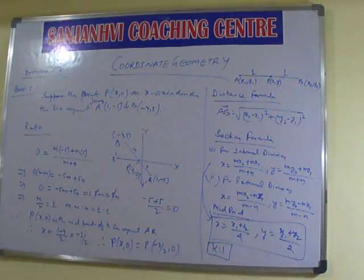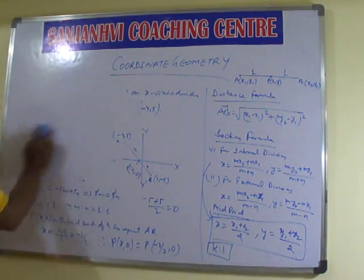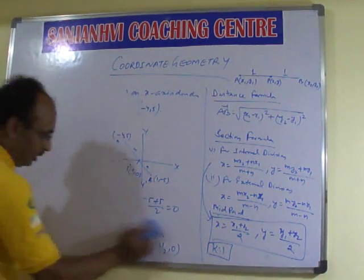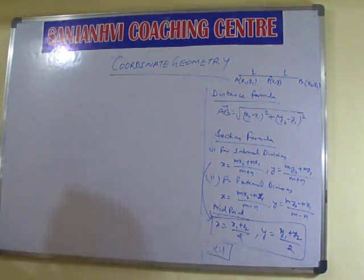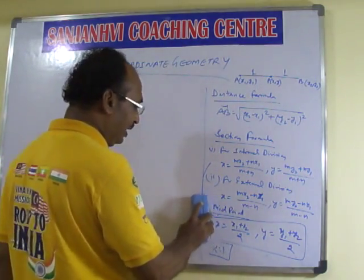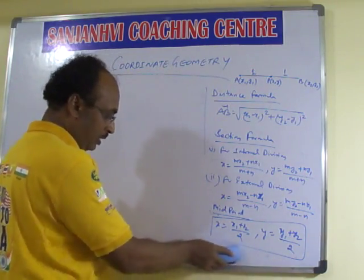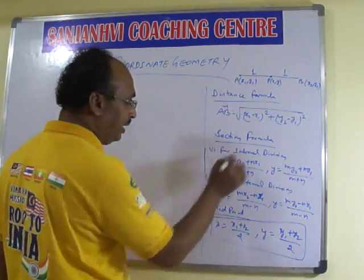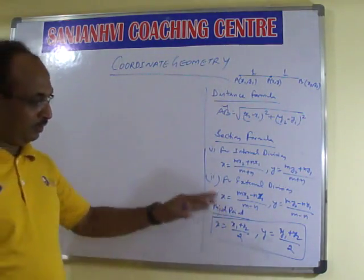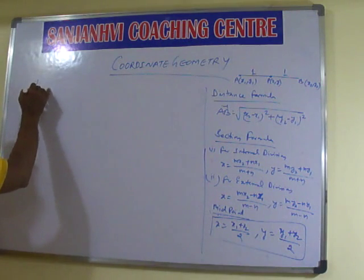We will go to the next topic, that is area of triangle. So what are the things we have understood so far in this chapter? Rameshwar, please tell me. Distance formula, sir. Yes, we discussed about distance formula. And section formula — we discussed section formula for internal division, external division, how to find the ratio, and how to find midpoint. Our next topic is area of triangle.